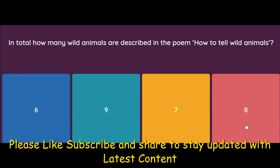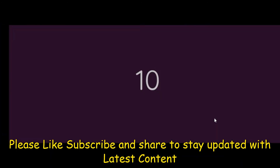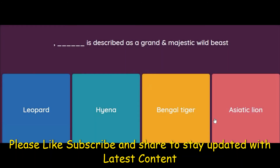In total, how many wild animals are described in the poem 'How to Tell Wild Animals'? You will have to remember this — there are seven wild animals described in the poem. Next: which animal is described as a grand and majestic wild beast? Options: Leopard, Hyena, Bengal Tiger, or Asiatic Lion. You will have to remember this one as well — the answer is Asiatic Lion.